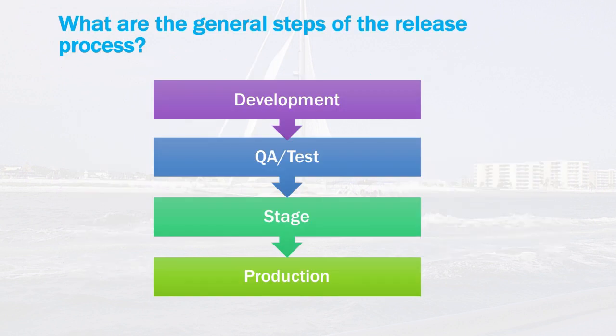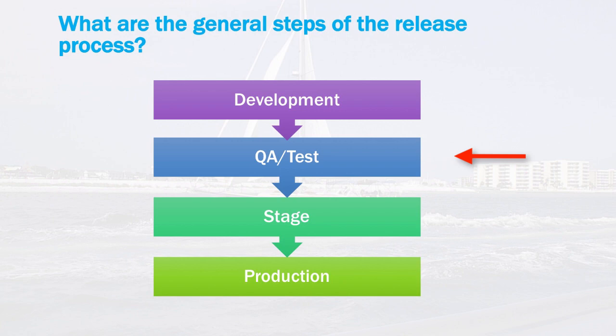There are four layers of progression from development all the way to production. The first layer is the development servers, where programmers check in their code, make daily modifications, and do a build process. Once the software is determined stable by the development staff, it gets promoted into a QA or test environment where users and the QA staff try the system to make sure the new changes are functional. This is an iterative process repeated many times during the development cycle — whether that's a two-to-three-week agile sprint or a longer waterfall window.